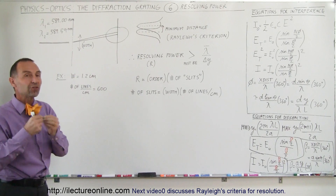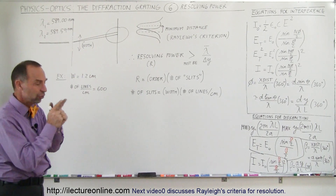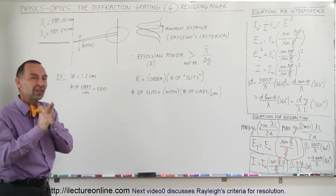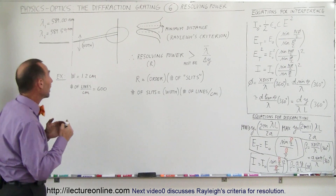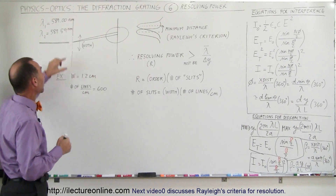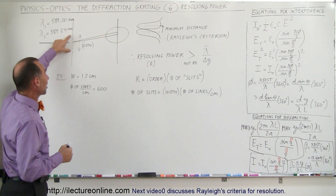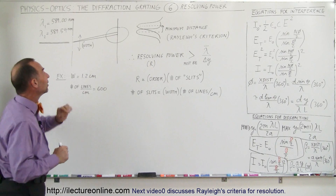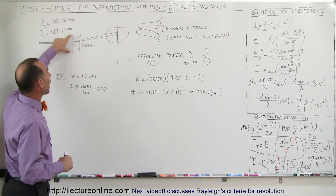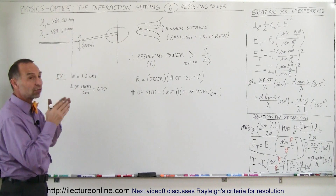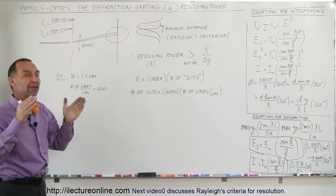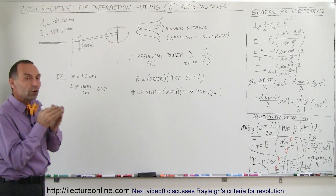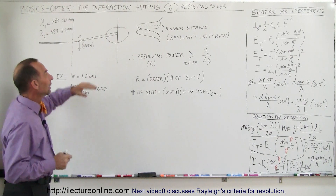So when light from a sodium lamp goes through the diffraction grating, it will split the two lines apart with just a very small separation angle. The question is: are we going to be able to see that as two separate lines, or will it appear as a single line? That depends upon two things: the number of lines per centimeter and how wide the diffraction grating is — in other words, how many total lines you have. And also, what order are we looking at?